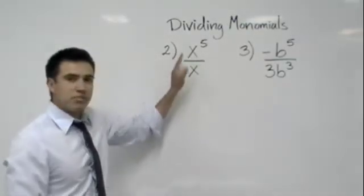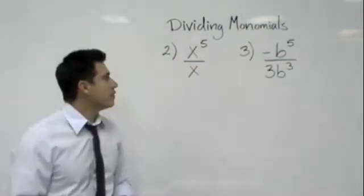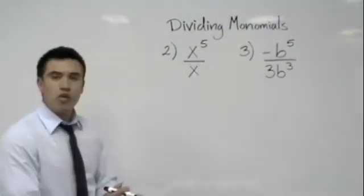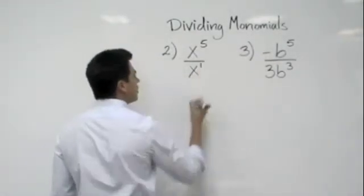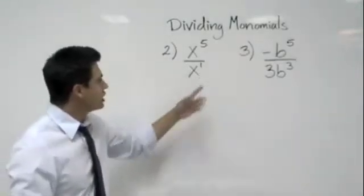Let's go ahead now and simplify what I told you. We have x to the fifth over x to the first power. Remember, if it doesn't have an exponent, we put it to the first power.